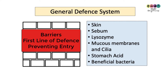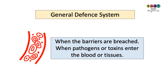That covers the first part of the general defense system — all of the barriers and systems in place to prevent the entry of pathogens: the skin, sebum, lysozyme, mucus membranes and cilia, stomach acid, and the presence of beneficial bacteria.